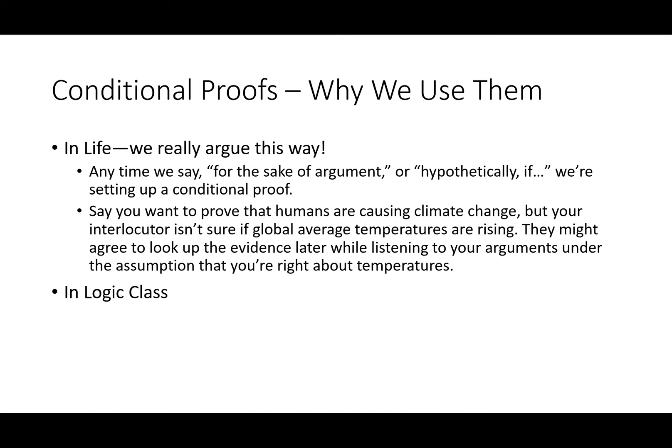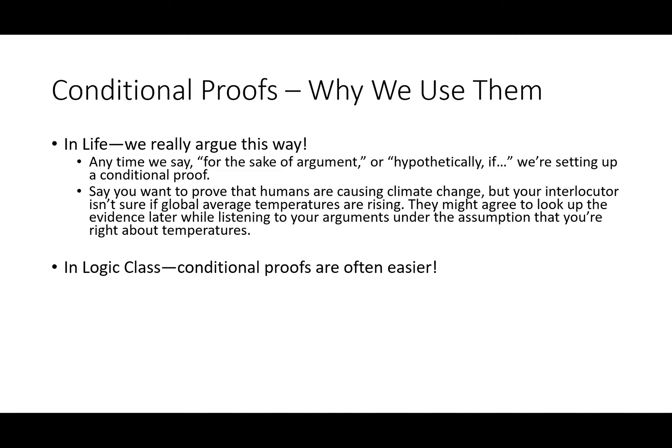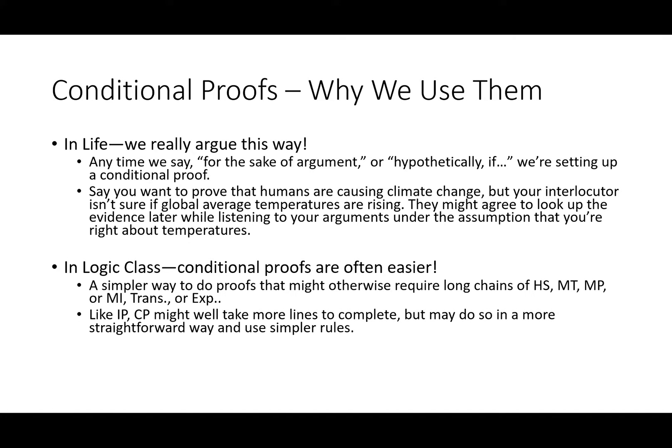In logic class, we use them because conditional proofs are often easier. They tend to be a simpler way to do proofs that might otherwise require extremely long chains of hypothetical syllogisms, modus tollens, modus ponens, material implication, transportation, or exportation. Like indirect proof, CP might well take more lines to complete, or maybe not, but may do so in a more straightforward way and use relatively simpler rules. Some systems rely so heavily on conditional proof that they have far fewer rules than we do.